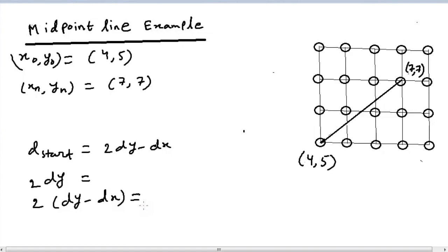We can of course find out dy and dx from these two endpoints. dy would be yn minus y0 which is 7 minus 5 equals 2, and dx would be xn minus x0 equals 7 minus 4 which is 3.